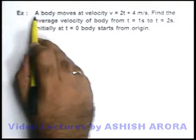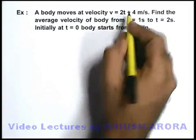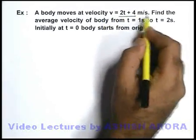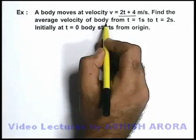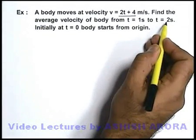In this example, we are given that a body moves at a velocity of v = 2t + 4 meters per second, and we are required to find the average velocity of the body from t = 1 second to t = 2 seconds.